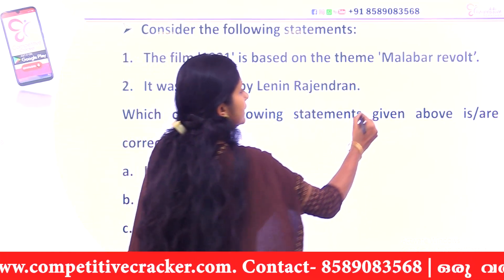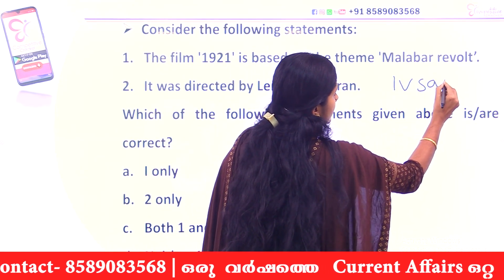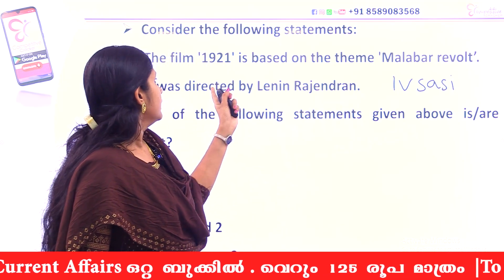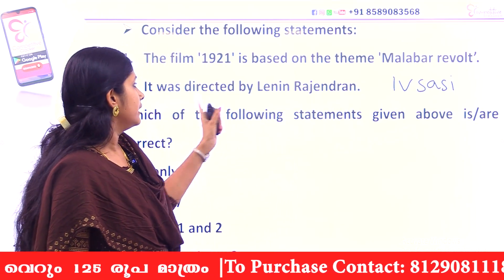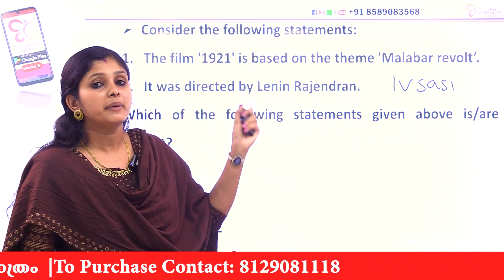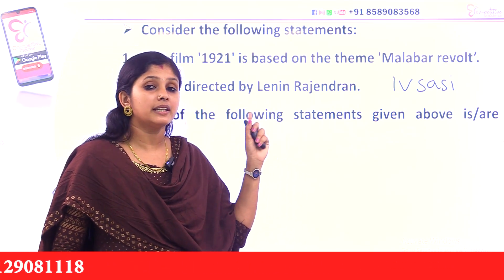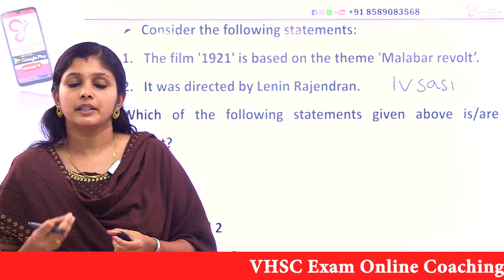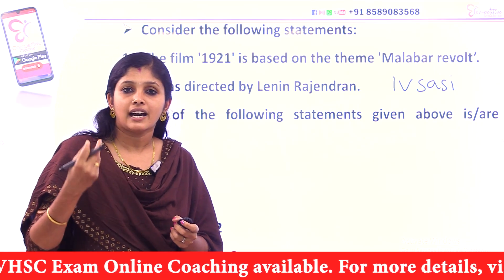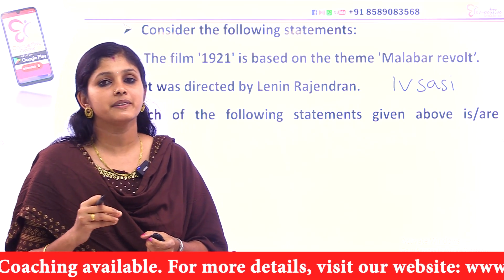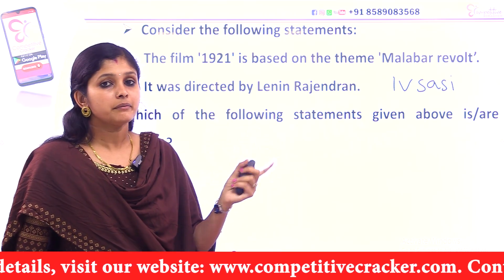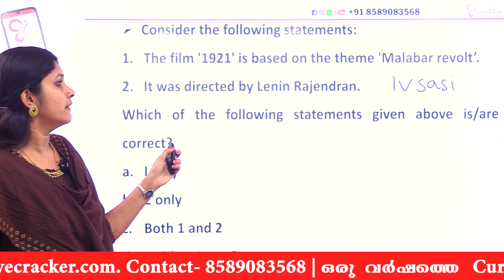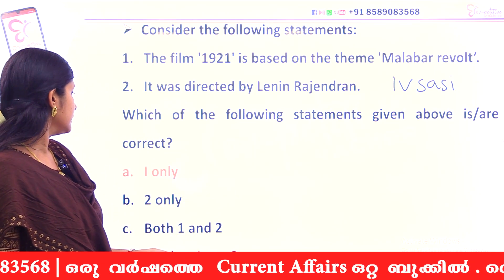1921 is directed by Ivy Shashi — not Lenin Rajendra. Ivy Shashi directed the 1921 movie. Lenin Rajendra's film is the Kaiyur revolt film — directed by Lenin Rajendra. So only statement 1 is correct. The answer is option 1.